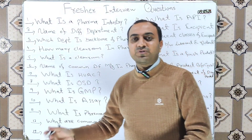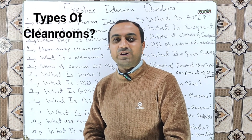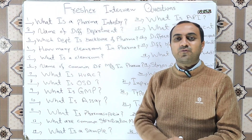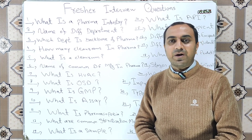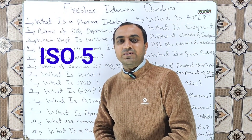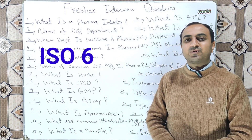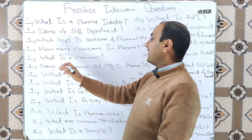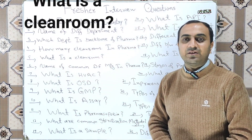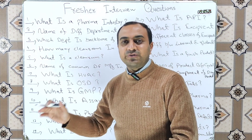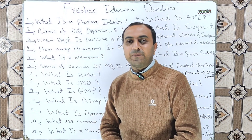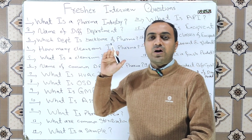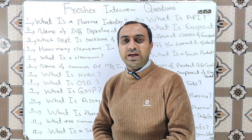How many types of clean rooms exist in the pharmaceutical industry? There are four types: ISO Class 5, ISO Class 6, ISO Class 7, and ISO Class 8 clean rooms. What is a clean room? A clean room is a closed area having a controlled number of viable and non-viable particle counts.